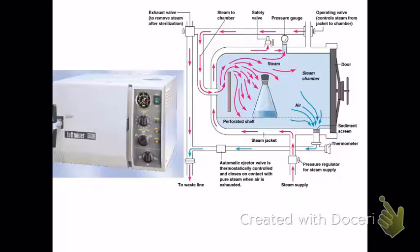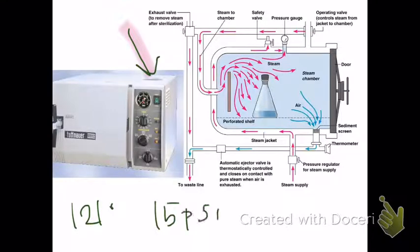The autoclave is maybe 2 foot by 2 foot in size. And so what we do is we pour water right here in the back. You can see. Oops, that was supposed to be that. You can see there. I pour water. Set it to 121 degrees Celsius. 15 pressure for 15 minutes.